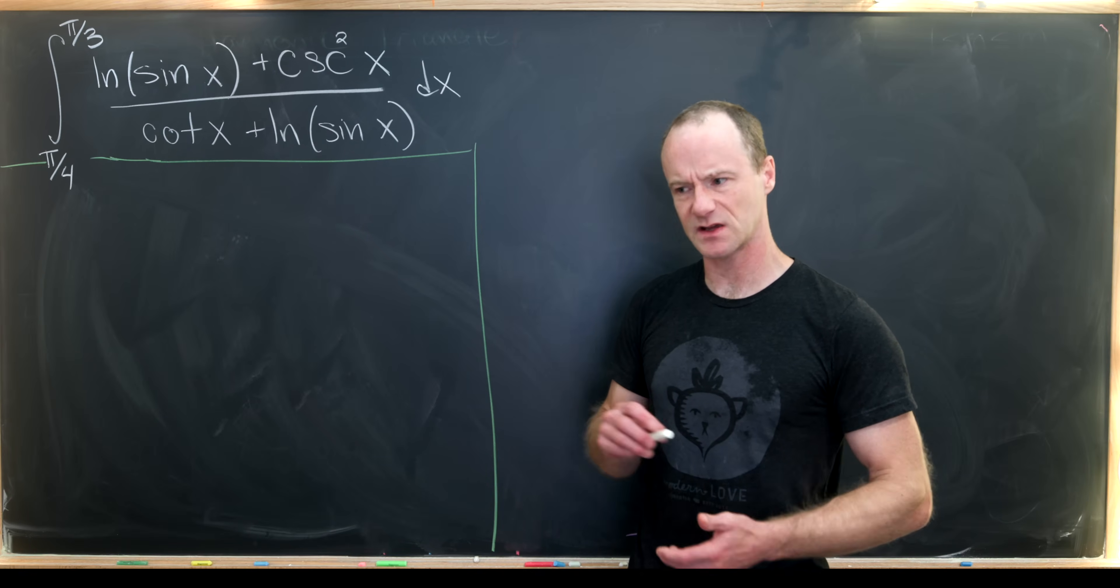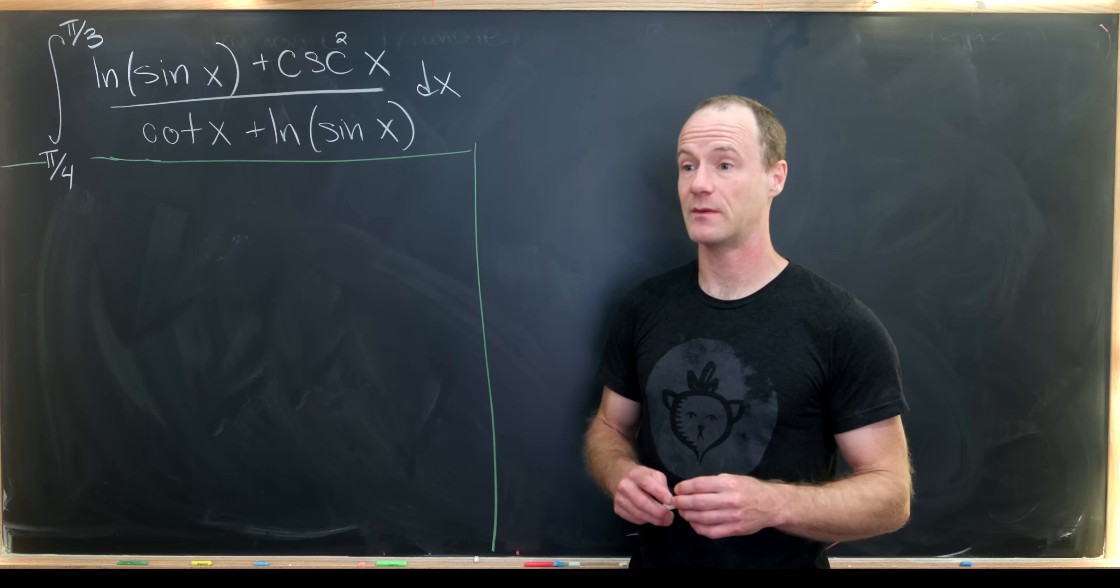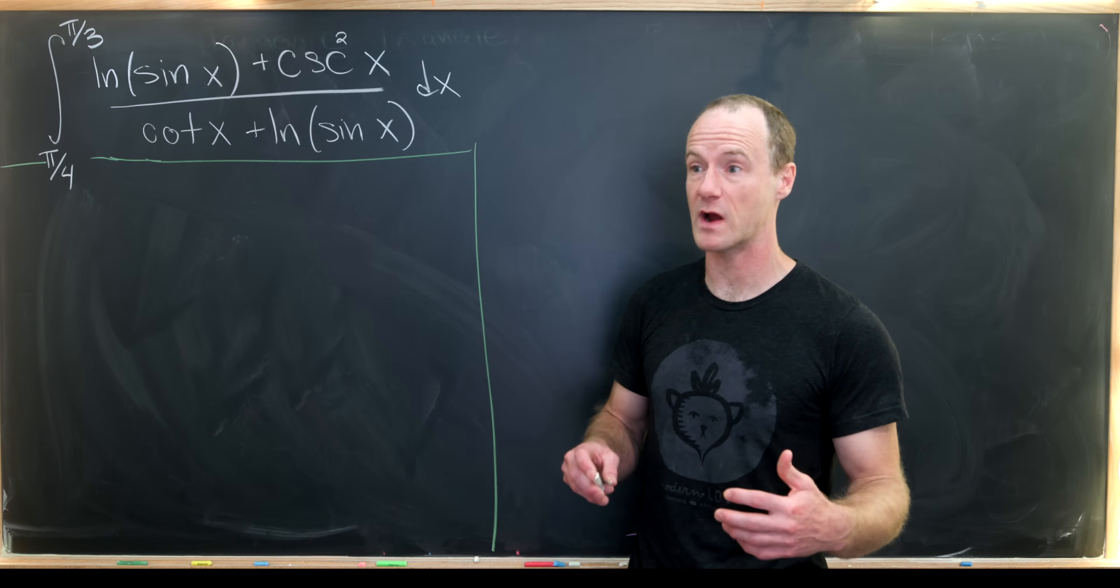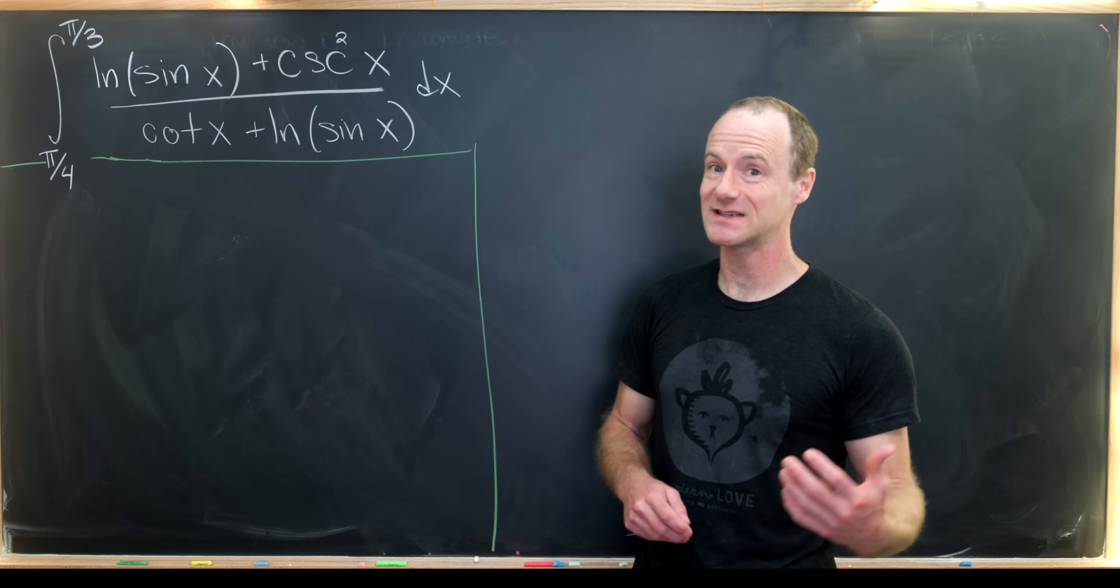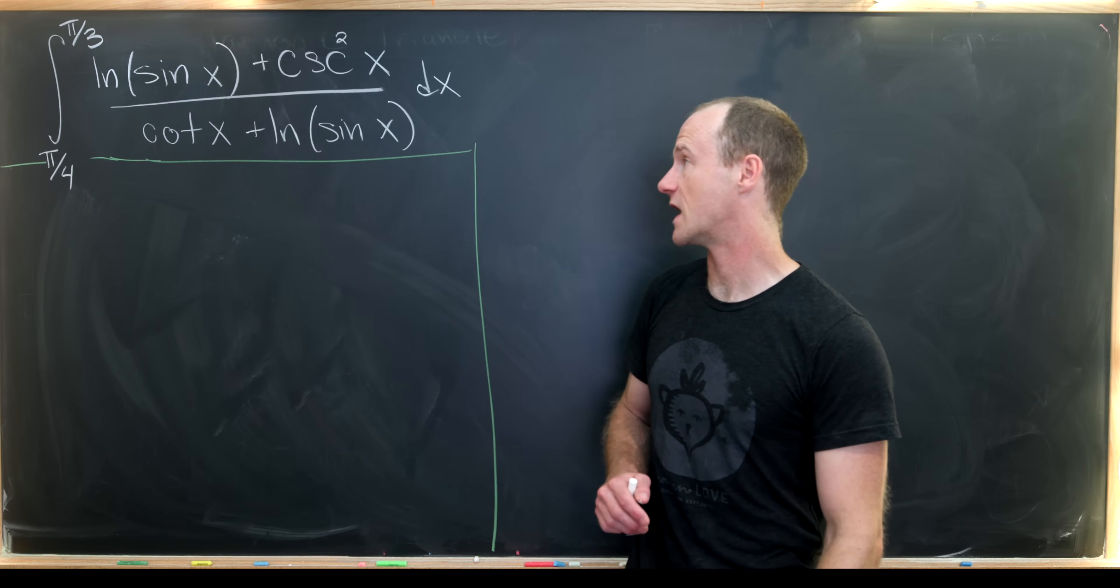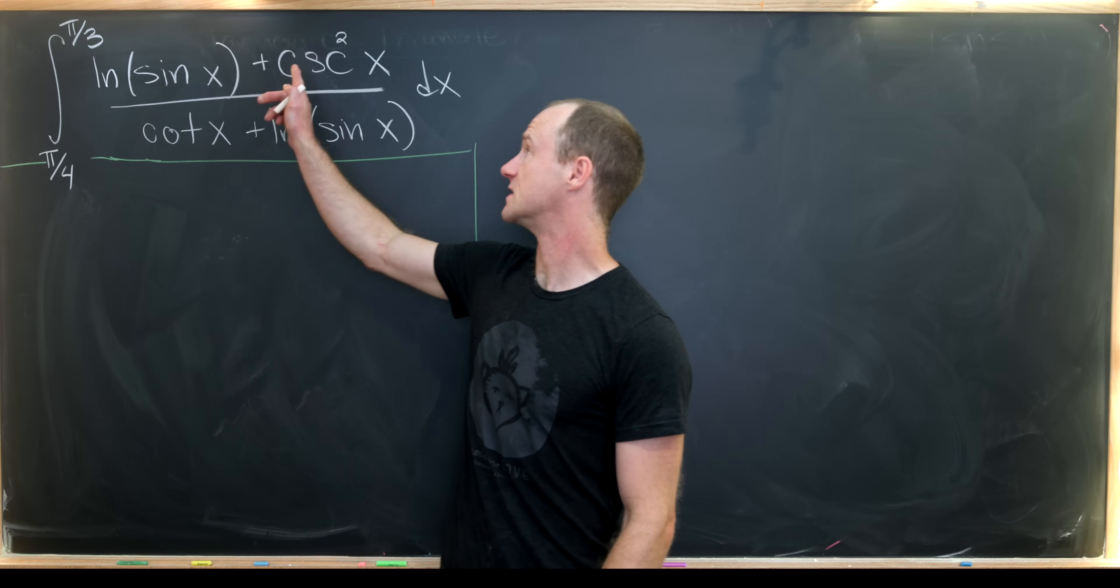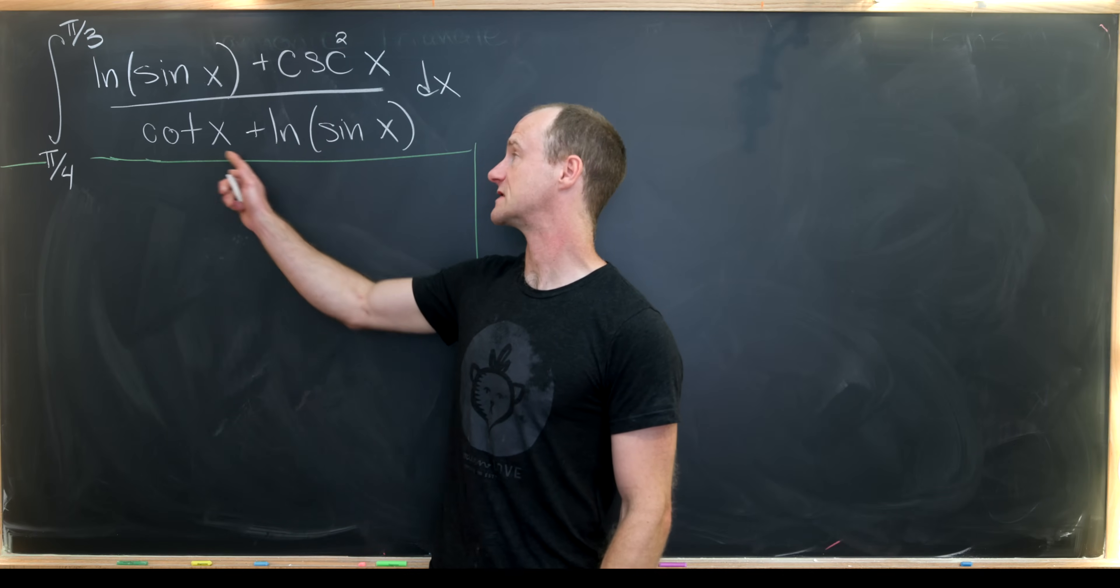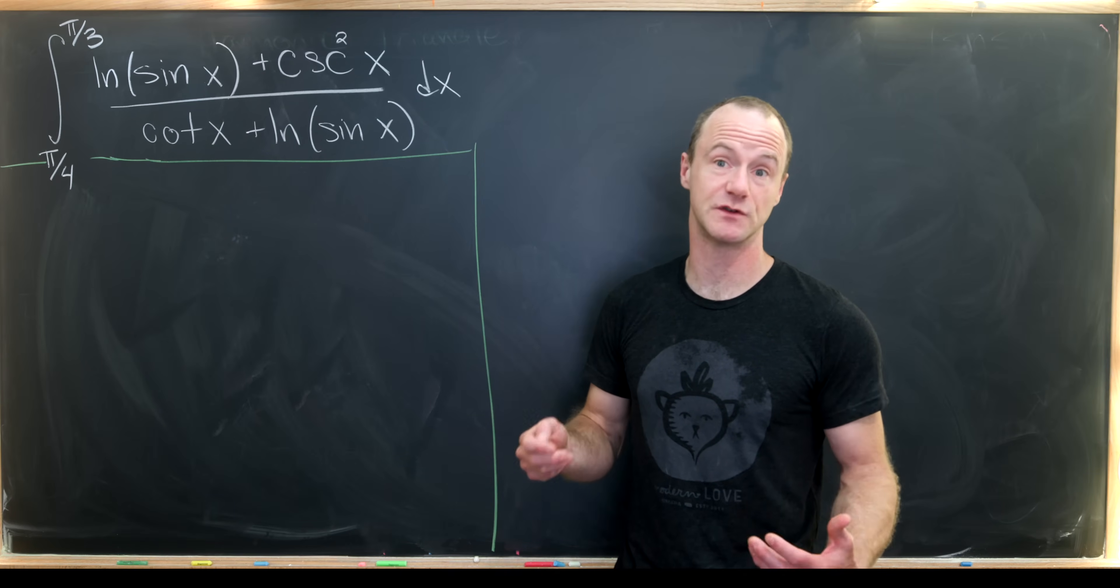Generally when you've got some sort of integral that involves a numerator and a denominator, it's not a terrible idea to make a substitution where the denominator is playing the role of our new function. And that's exactly what we'll do here. And some other things pointing us towards that are the fact that the derivative of cotangent is negative cosecant, so perhaps not the derivative of the entire denominator is the numerator, but at least we kind of get off to a good start.